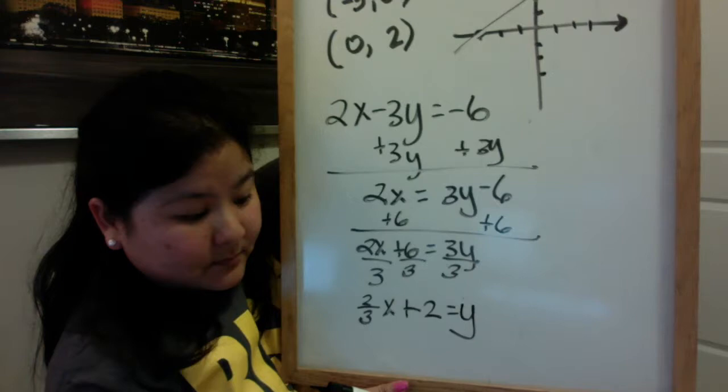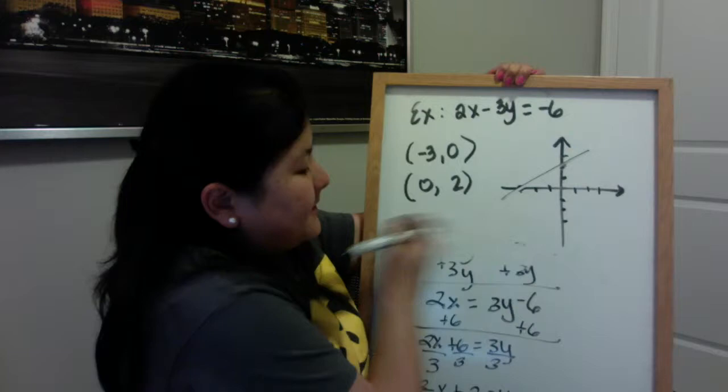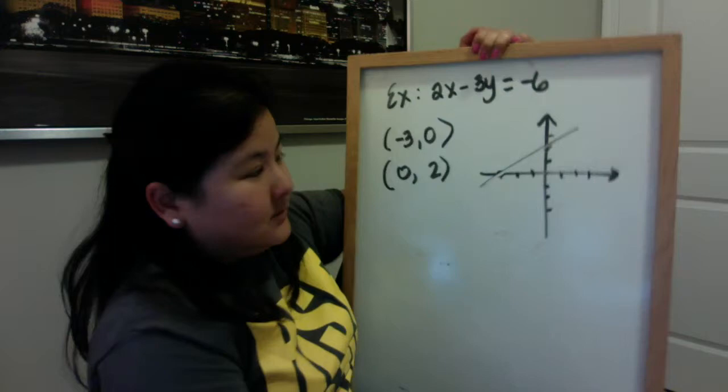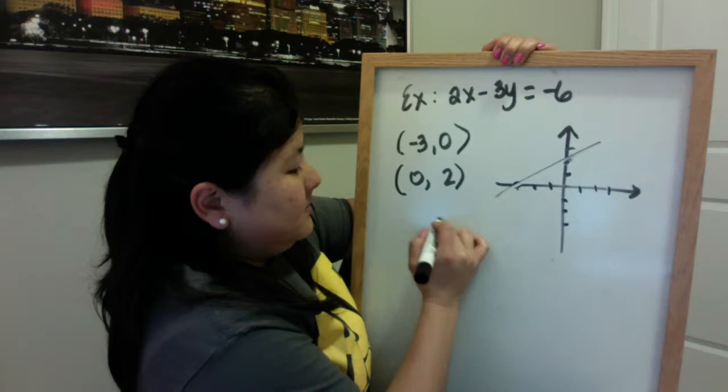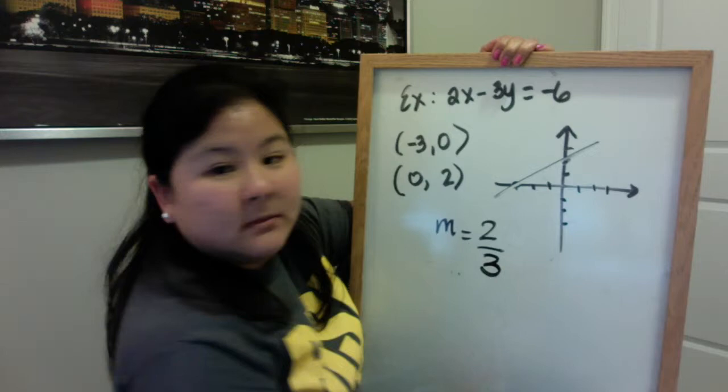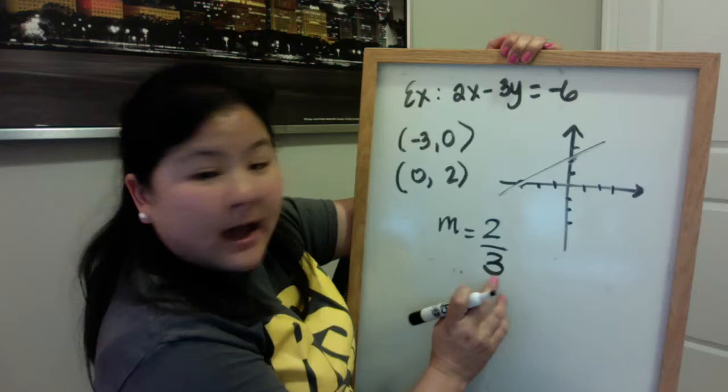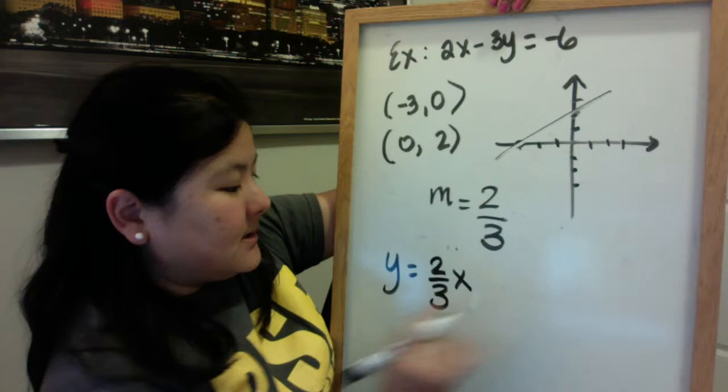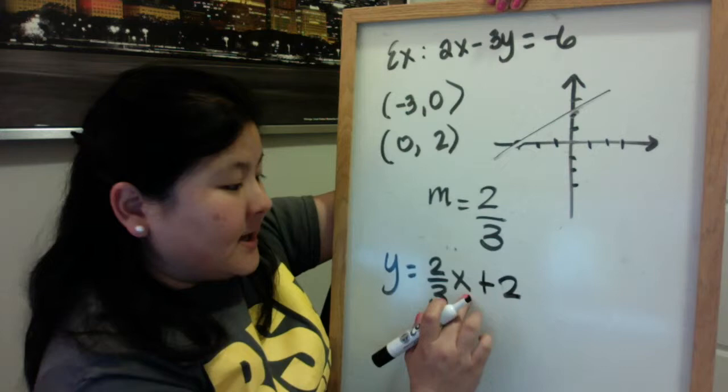Another way you could have done it, instead of having to transform it, since we already graphed it, just apply rise over run. We know that this is rising 2 and then running 3. I have my y-intercept. That's my b value. I have my slope. So I can just say my equation is 2 thirds x. Y equals mx plus 2. Y equals mx plus b. A lot easier.